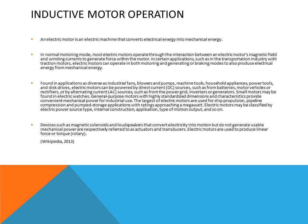Inductive type motors generate a magnetic field that is induced into the rotor to cause it to turn. This magnetic field causes the rotor to become magnetized. In magnetism, like poles repel each other while opposite poles attract. So the rotor is always trying to catch up with the poles in the stator. It would never catch up — and that is a good thing — because if it did, the motor would stop turning. There are always losses, so the rotor will lag behind and try to catch up to the correct pole.